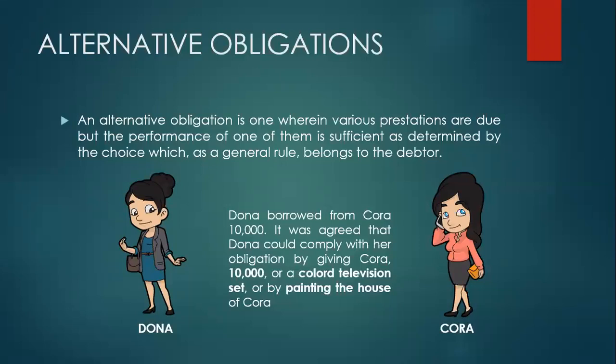For example, Donna borrowed from Cora 10,000 pesos. It was agreed that Donna could comply with her obligation by giving Cora 10,000, or a colored television set, or by painting the house of Cora. So in this particular scenario, there are various prestations that are due.